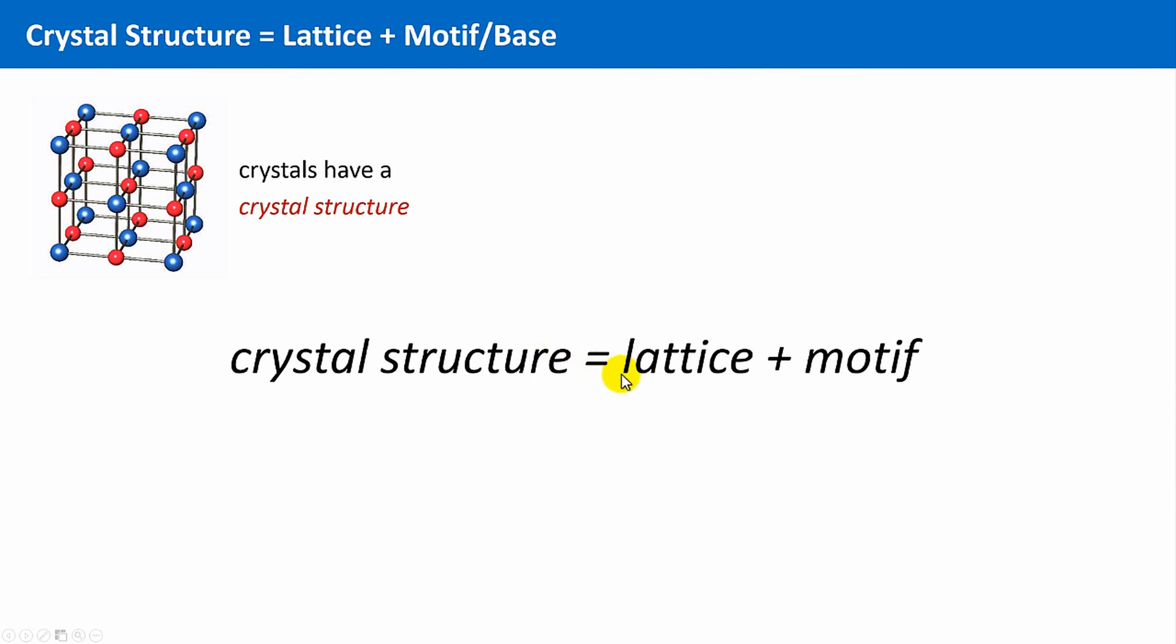A crystal structure is a lattice plus the motif. The motif is sometimes also called the base. So we first have to look what lattice means, then what a motif is and in which way it is linked to our crystals.